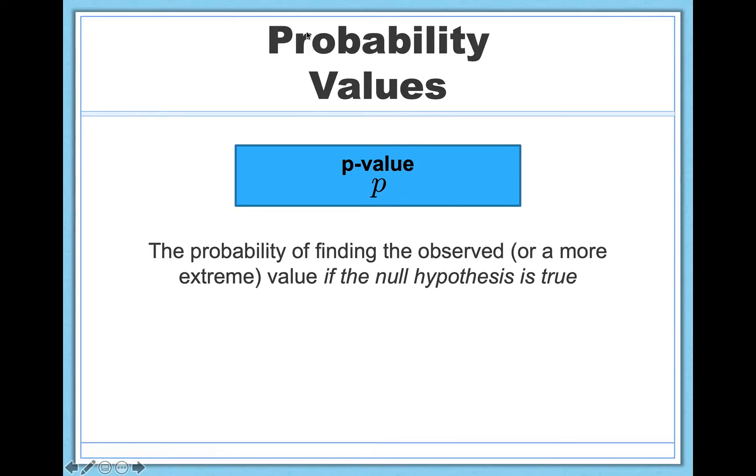So in order to make this decision, I have to introduce this last concept of a p-value. P-values are simply probability values, and it's the probability of finding the observed value or a value more extreme than what you observed if the null hypothesis is true. So this is a jargony definition, but an extremely important one.